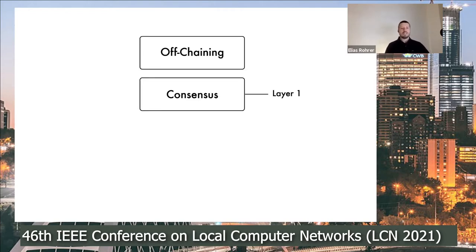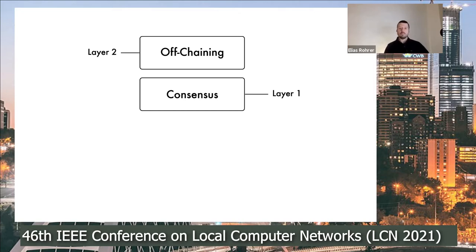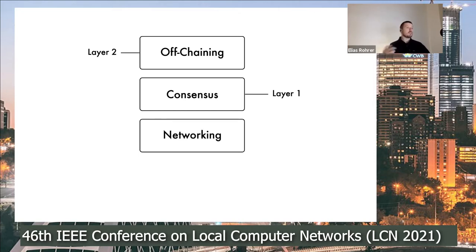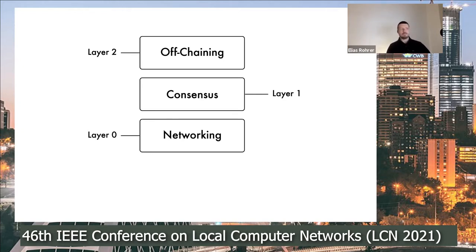These systems are notorious for not scaling that well. By now we have off-chaining layers on top of them to increase the scalability of these blockchain systems and improve transaction throughput — this is layer two. However, today we are talking about blockchain layer zero, which is the networking layer: the peer-to-peer networking layer on which both the consensus and off-chaining layers actually rely on for communication.